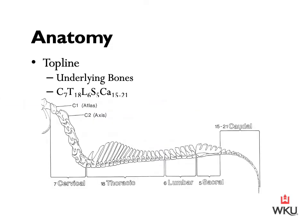When looking at the underlying bones of the top line, this is known as the vertebral column. The vertebral column is made up of the atlas, the axis, the cervical vertebrae, the thoracic vertebrae, lumbar vertebrae, sacral vertebrae, and the caudal vertebrae. The atlas is C1 at the top of the neck, and the axis is C2 — they go in alphabetical order, atlas to axis. Following that, we have seven cervical vertebrae total — the atlas and axis are included within these seven.